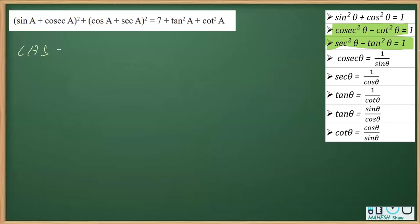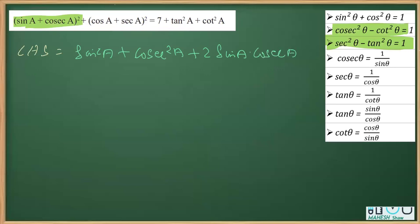Now I am expanding the LHS. The first part is (a + b)², so a² is sin²a, b² is cosec²a, and 2ab is 2 times sin a times cosec a.